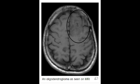What is the term used to describe the capillary pattern in Oligodendroglioma? The term used to describe the capillary pattern is called the chicken wire capillary pattern.